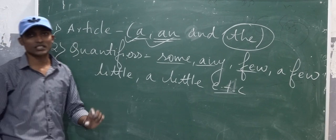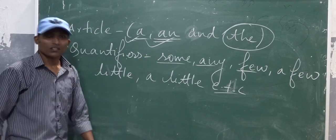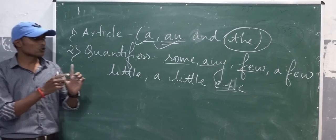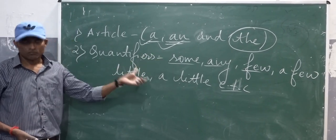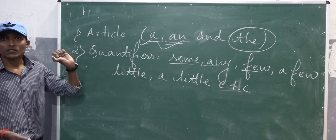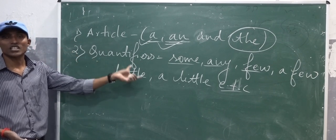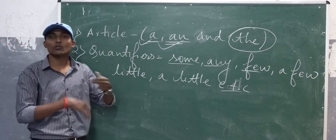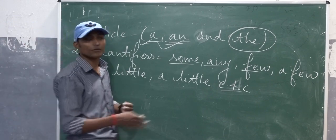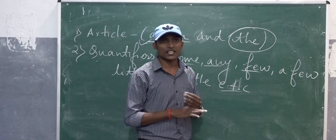'The' is a definite article. We use 'the' before superlatives, before any famous thing, before the name of holy books, before the name of mountain ranges, before the name of rivers, and before the name of any rivers or links.